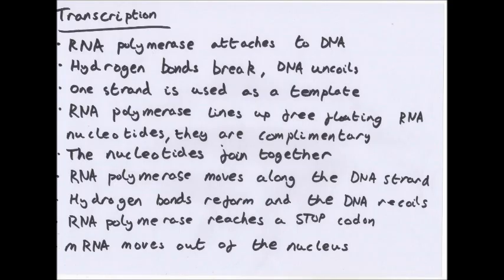So, what happens in transcription? RNA polymerase attaches to DNA. It will attach at the beginning of the gene, and it will be the DNA double helix. It hasn't unwound yet. The hydrogen bonds between the two DNA strands in the gene break. These are between the C and G bases, and the A and T bases. This separates the strands, and the DNA molecule uncoils at that point. One of the strands is then used as a template to make an mRNA copy. The RNA polymerase lines up free-floating RNA nucleotides alongside the template strand.